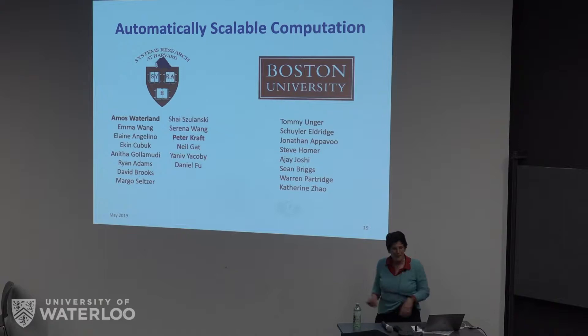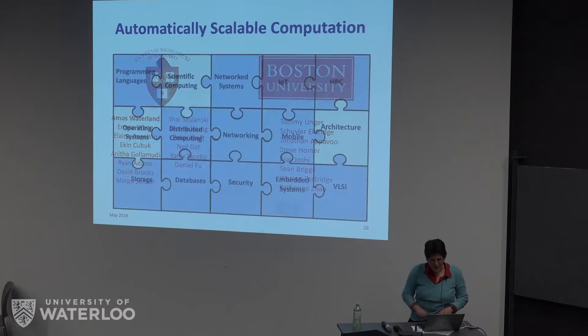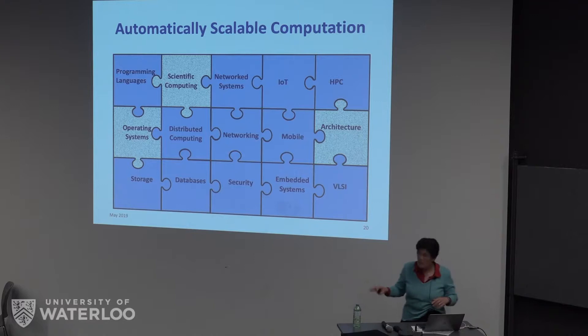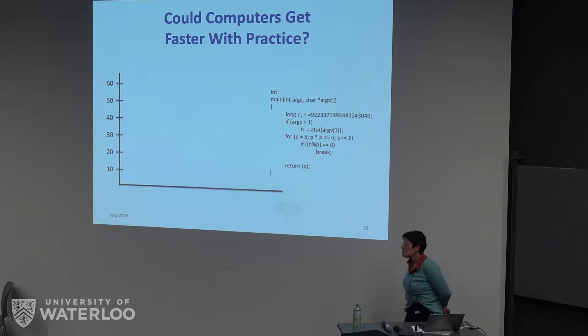We spun up a big project — this is an NSF grant with the folks at BU. Not only do we have graduate students and faculty, we have undergraduates and even high school students who worked on this project. If I have to place this project in the spectrum of systems, it has elements of high-performance computing, scientific computing, operating systems, architecture, and maybe some distributed computing. There are also some interesting storage problems — it spans a good chunk of the map.